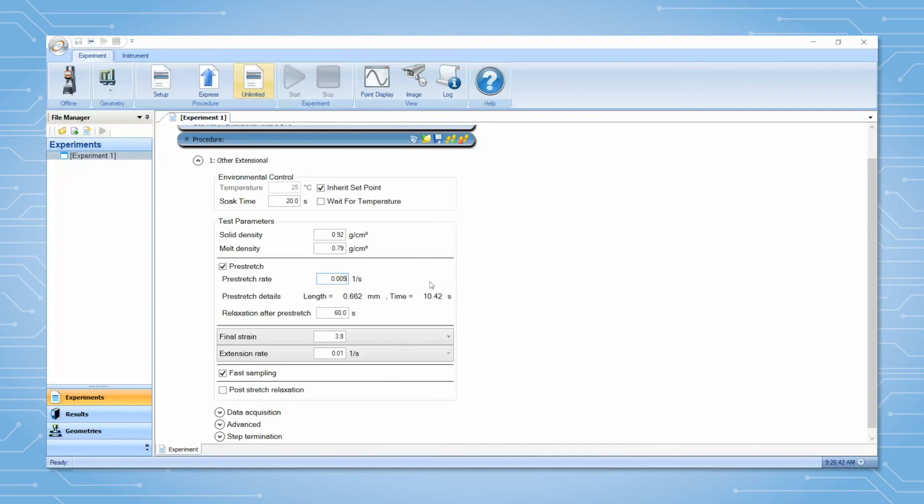The relaxation after pre-stretch time should be set so the sample relaxes fully before the extensional experiment starts. Less than 30 seconds is typical. Set the desired final strain or time and the desired extensional rate.